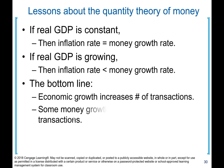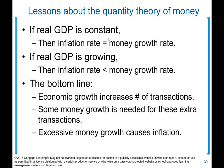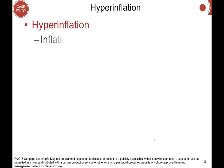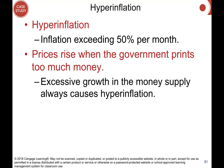Lessons about the quantity theory of money: if real GDP is constant, the inflation rate equals the money growth rate. If real GDP is growing, the inflation rate is less than the money growth rate. Economic growth increases the number of transactions, so some money growth is needed for these extra transactions. Excessive money growth causes inflation.